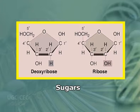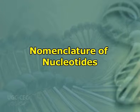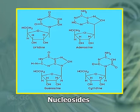Now, nomenclature of nucleotides — nitrogenous base and sugar combine to produce nucleoside. If ribose sugar is present in the nucleoside, it is called a ribonucleoside. The ribonucleoside of adenine is called adenosine, of guanine is called guanosine, of cytosine is called cytidine, and of uracil is called uridine.